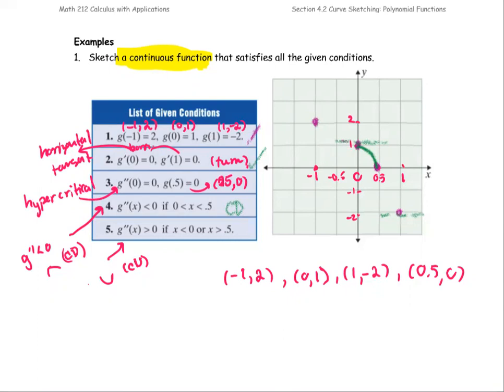And then for the interval less than 0, the graph is concave up. So the graph will be above my tangent line, which is the same behavior as the portion or the interval greater than 0.5.